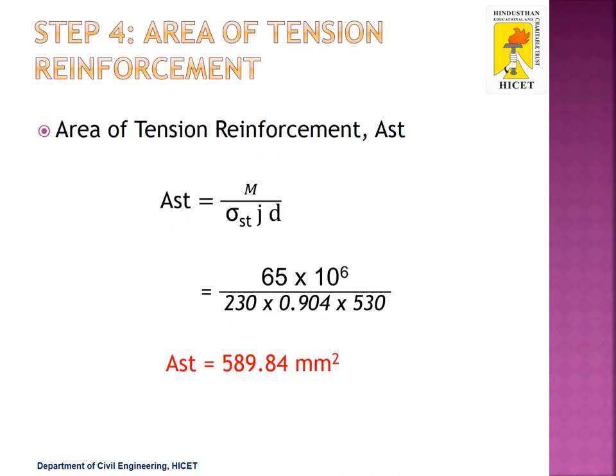Next, we find the area of tension reinforcement for the balanced section. The formula for AST is M divided by (sigma ST into J into d). The moment is 65 into 10⁶ N·mm, sigma ST for Fe415 is 230 N/mm², J is 0.904, and effective depth d is 530 mm. Substituting all values, AST equals 589.84 mm². This is the method to find the beam dimensions and area of tension reinforcement as per the working stress method of design.